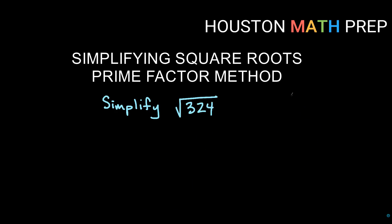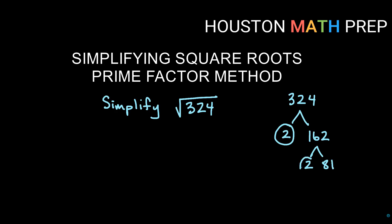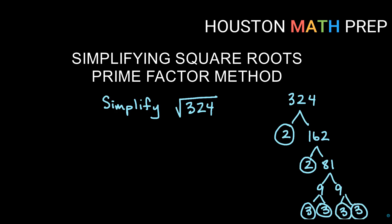Moving up a bit bigger now: 324. We did this one in the previous video. I'll start by pulling out 2 since it's even — 2 times 162. Still even, so 2 times 81. Then 81 splits into 9 and 9. We said we'd stick with prime factors, so each 9 becomes 3 times 3. So 324's prime factorization is 2 times 2 times 3 times 3 times 3 times 3 — that's 2 copies of 2 and 4 copies of 3.